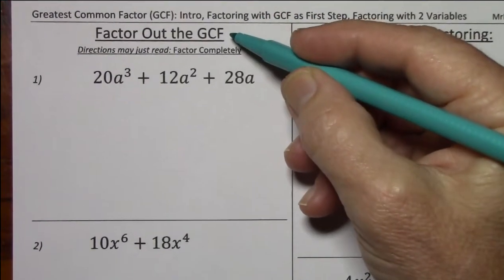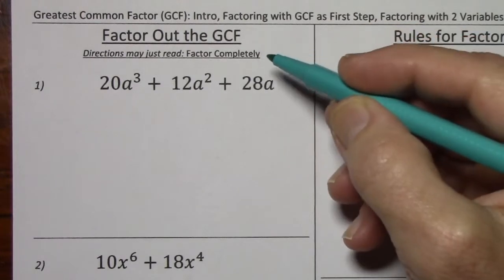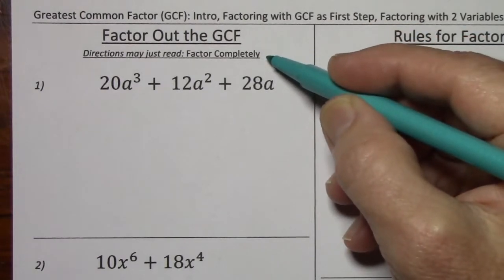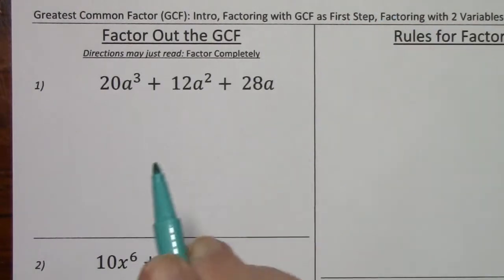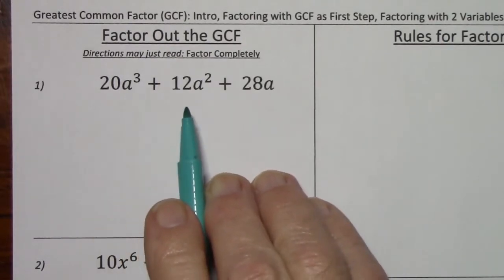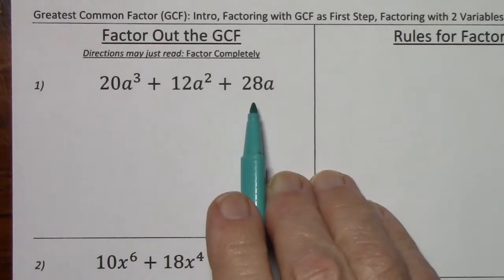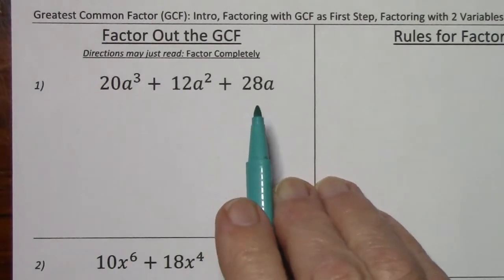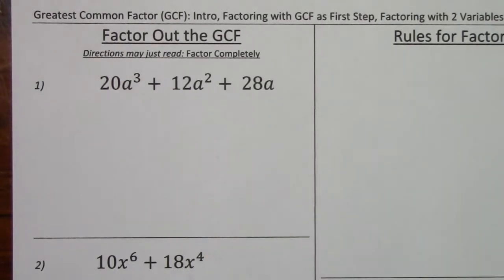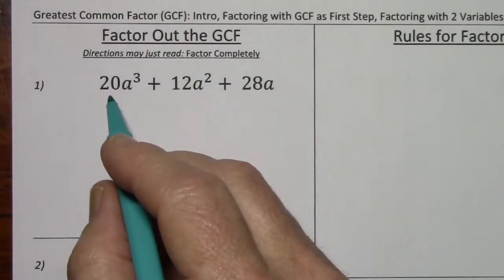In cases where you need to factor out the GCF, the directions may just read 'factor completely.' With this first example, I'll show a factored form of each term to make it very clear that I'm dividing out the greatest factor that is common to each term. I'm not going to write the prime factorization, but I'll show a factored form.